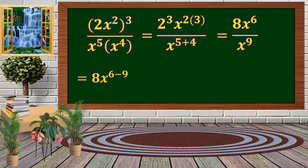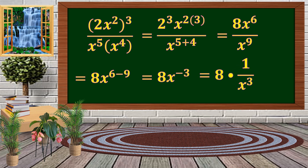We get 8x raised to 6 minus 9, copying the variable x and subtracting the exponents. The outcome is 8x raised to negative 3. Since only x has a negative exponent, we take the inverse: 8 times 1 over x raised to 3, making the exponent positive. The final simplified result is 8 over x cubed.